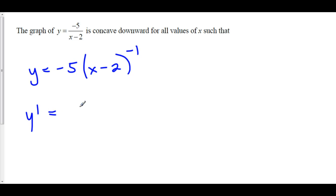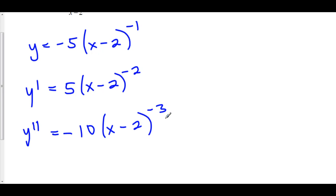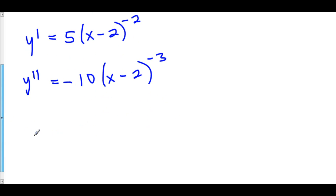y prime: we bring down the -1, so -5 times (x-2)⁻¹ differentiates to positive 5 times (x-2)⁻² times the derivative of (x-2), which is just 1. Now for y double prime: 5(x-2)⁻² differentiates to -10(x-2)⁻³ times the derivative of (x-2), which is again 1. So y double prime equals -10/(x - 2)³.